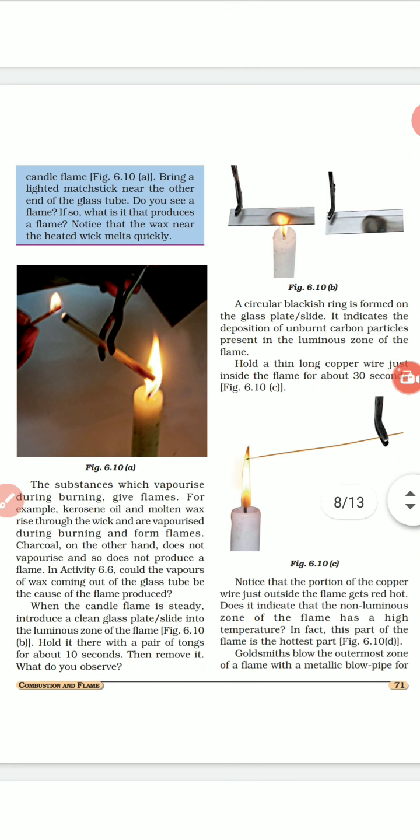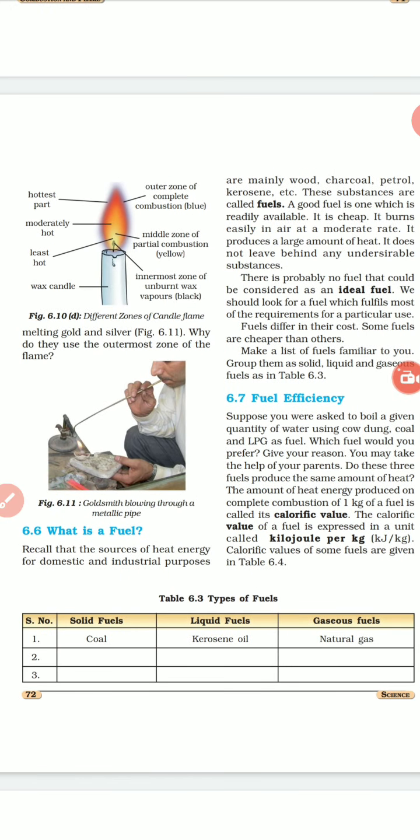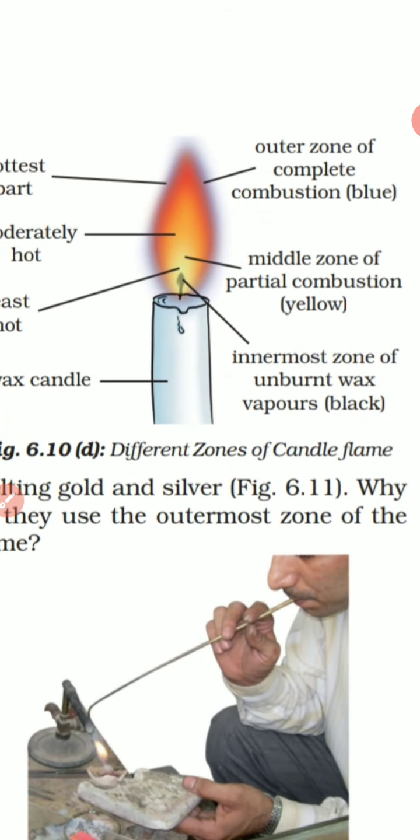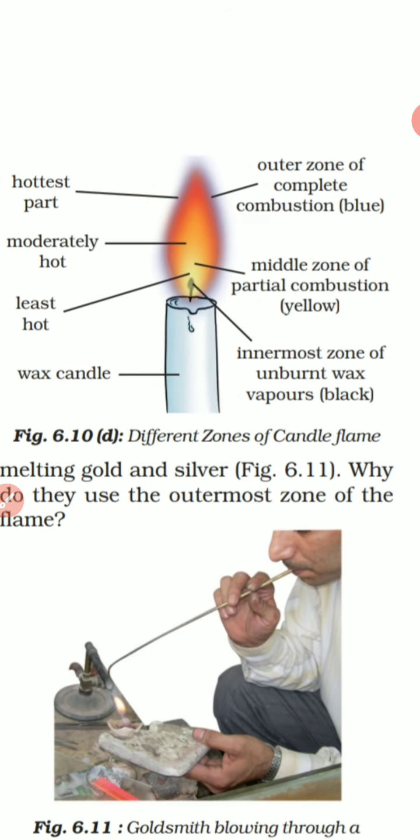I will show you the different zones of the candle. Here you can see the picture — there are three zones: the outer zone, the middle zone, and the innermost zone. If you observe the flame very carefully, you can see three colors, like three distinct layers.